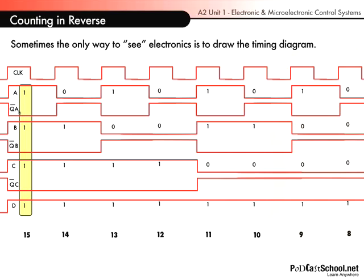So when A is high, Q bar A is low and vice versa. Now we are, remember, clocking the second T-type flip-flop with Q bar A.